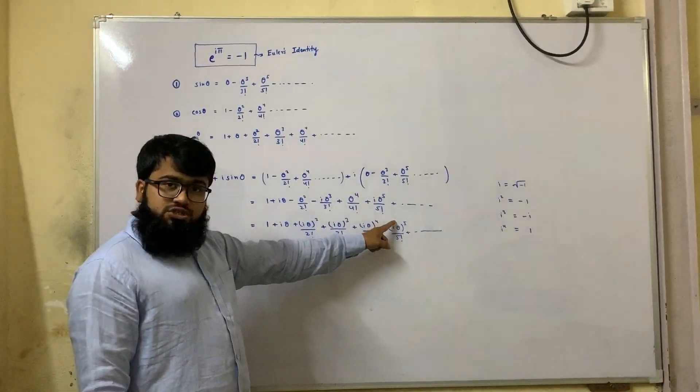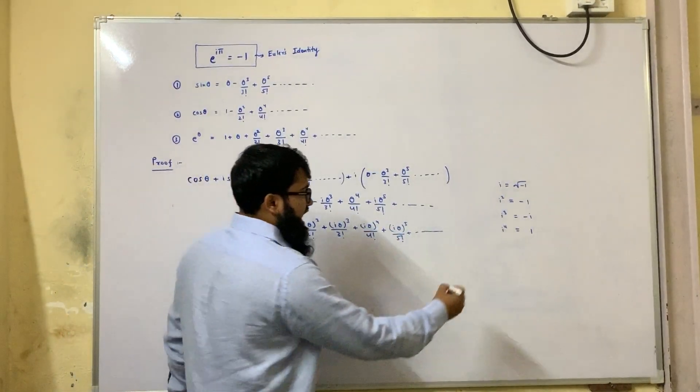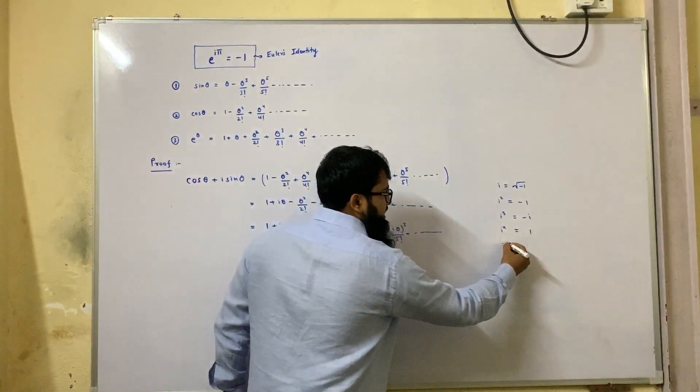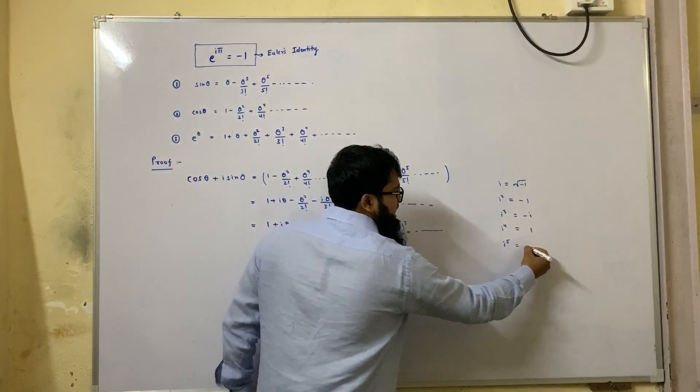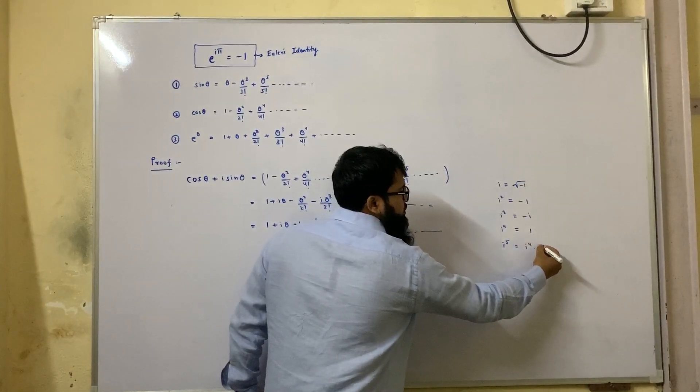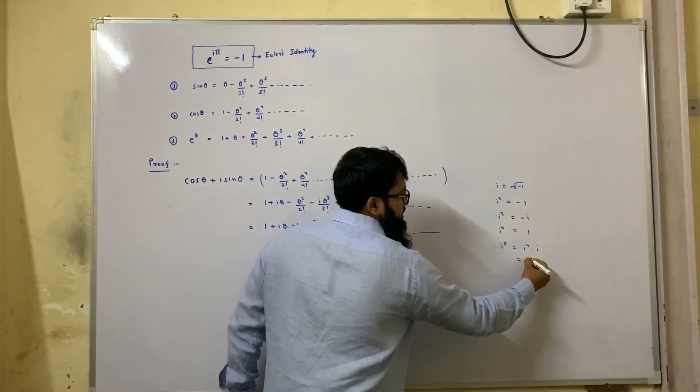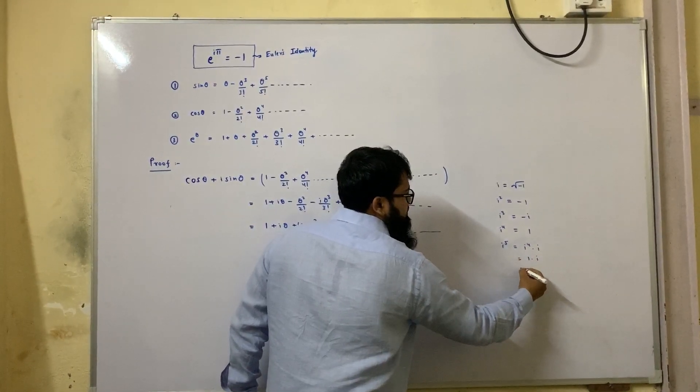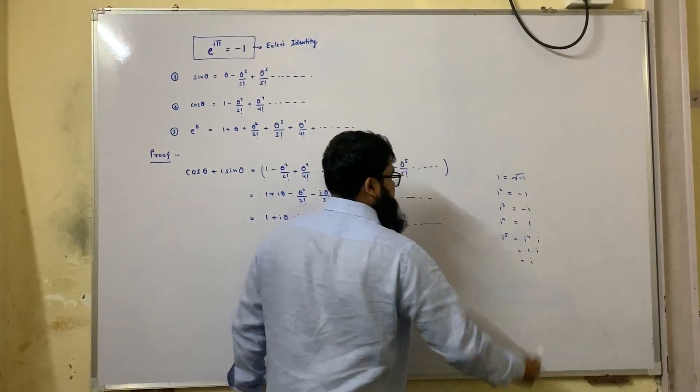How did I come to this conclusion? Because i raise to 5 can be written as i raise to 4 into i, which is equal to 1 into i, which is equal to i.